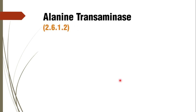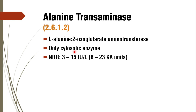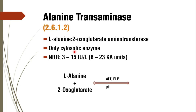Coming to alanine transaminase, its enzyme classification number is 2.6.1.2 — L-alanine 2-oxoglutarate aminotransferase; only the amino acid is changed in the name. It is only a cytosolic enzyme — this is a very important point. Aspartate transaminase is both mitochondrial and cytosolic, whereas alanine transaminase is only cytosolic. The normal reference range for ALT is 3 to 15 international units per litre, which is 6 to 23 King-Armstrong units. The chemical reaction catalyzed by ALT is similar to AST, with L-alanine replacing L-aspartate.